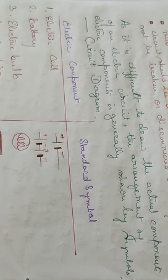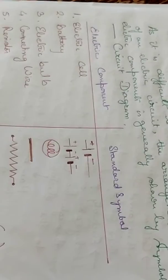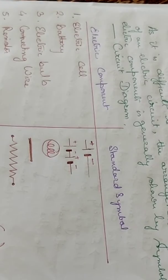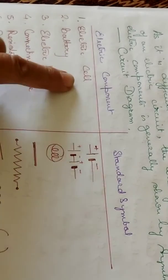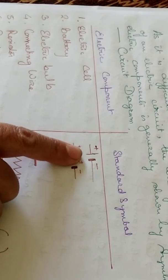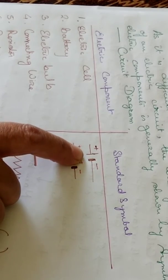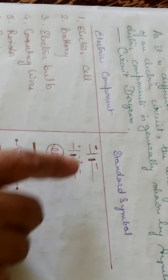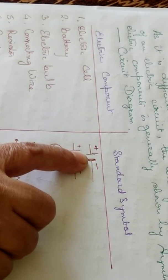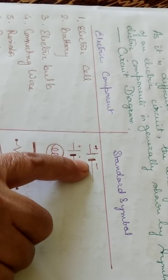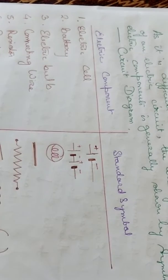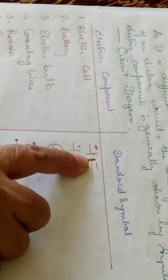So what are the electric components which are used for the circuit diagram and what are their standard symbols? Let us discuss now. First is electric cell. It has one thin line which acts as a positive terminal and a thick line which acts as a negative terminal. The thin line is long and the short line is thick.